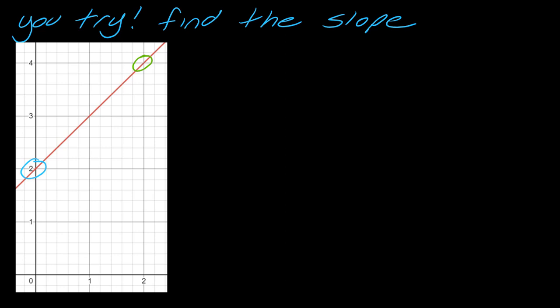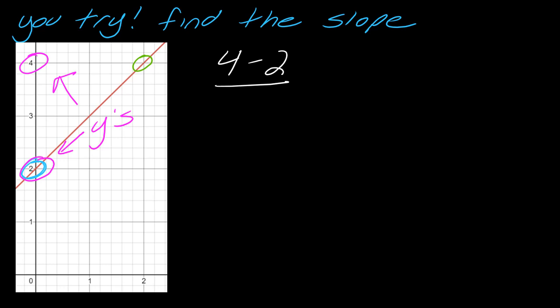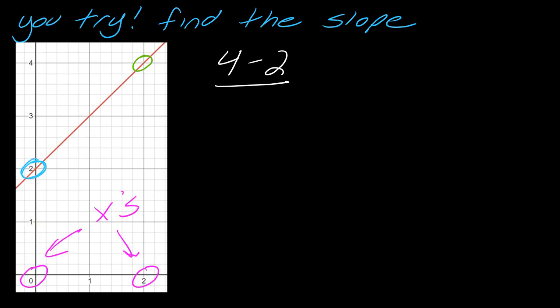First things first, select two points — I selected those two. If you selected different points, that's okay, you should get the same answer. I look at the y's: taking the green point over to the y-axis, that's 4, and the blue point is already touching the y-axis at 2. So I take 4 minus 2. Next I reference the x-axis: the green point is at 2 and the blue is at 0, so I do 2 minus 0. This comes out to 2 over 2, so I get 1.